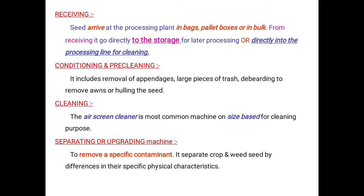Taking each operation one by one: the first operation is receiving. Seeds arrive at the processing plant in bags, pallet boxes, or bulk. From receiving, they go directly to storage for later processing, or directly into the processing line for cleaning.